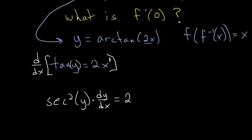And now we can solve this equation for dy dx by just dividing each side by the secant squared y. So we have that dy dx is equal to 2 over the secant squared of y.